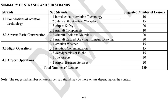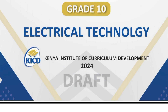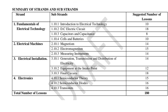Next is electrical technology. The first strand is fundamentals of electrical technology, with substrands: introduction to electrical technology, DC electric circuits, capacitors and capacitance, and cells and batteries. The second strand is electrical machines, covering magnetism, electromagnetism, and measuring instruments. The third strand is electrical installations, which includes generation, transmission and distribution of electricity, equipment at the intake point, and final circuits.